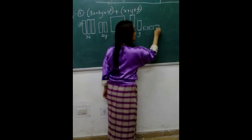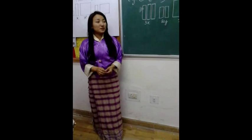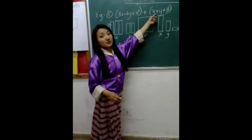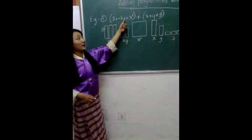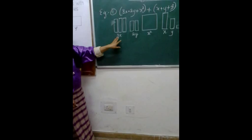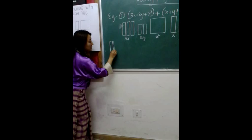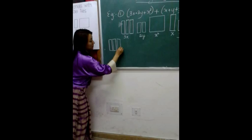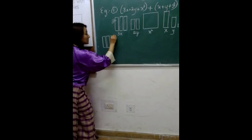Now we are going to combine the like terms. Can you see here X, and here also X? So we can combine these two X. Here it's three X, and one more X here. So, one, two, three, four — four X.